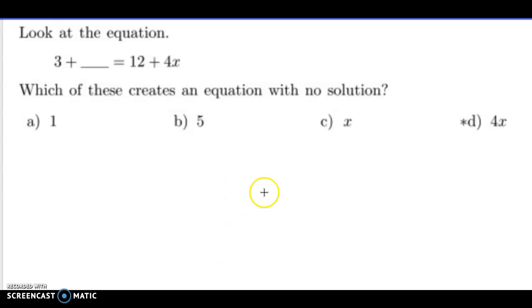Remember, no solution will mean that I will get an untrue statement from the left side to the right side. An answer such as this, like 3 equals 2. That's an untrue statement, so that would mean no solution.